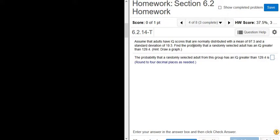Assume that adults have IQ scores that are normally distributed with a mean of 97.3. So that's our mu, mu is equal to 97.3.